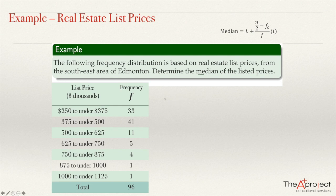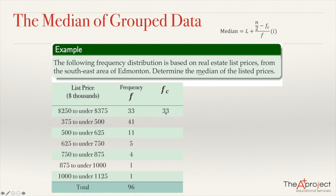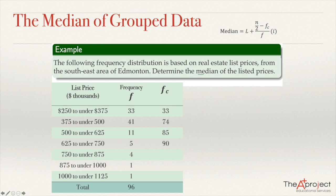Making another column for the cumulative frequency is a good idea. The first cumulative frequency is the same as the first frequency: 33. The cumulative frequency of the second class is the frequency plus the previous cumulative frequency, which is 41 plus 33, giving 74. 74 plus the next frequency 11 gives 85. 85 plus 5 is 90. 90 plus 4 is 94. 94 plus 1 is 95. And 95 plus 1 is 96. So we have the full cumulative frequency column.